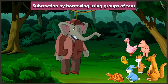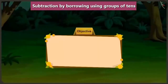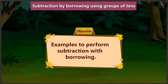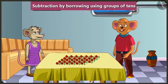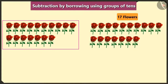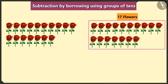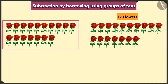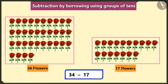Children, you have learnt how to subtract 2-digit numbers with borrowing in the previous video. In this video, we will see some examples of subtraction with borrowing, listening to the conversation between Chichi and Chuchu. Chichi, let us decorate the house by making a bouquet of these 34 roses. Let us make it. I will make a bouquet of 17 flowers, and you make a bouquet with the remaining flowers. If you will make a bouquet with 17 flowers of the 34 flowers, how many flowers would be left for me? Let us subtract 17 from 34.